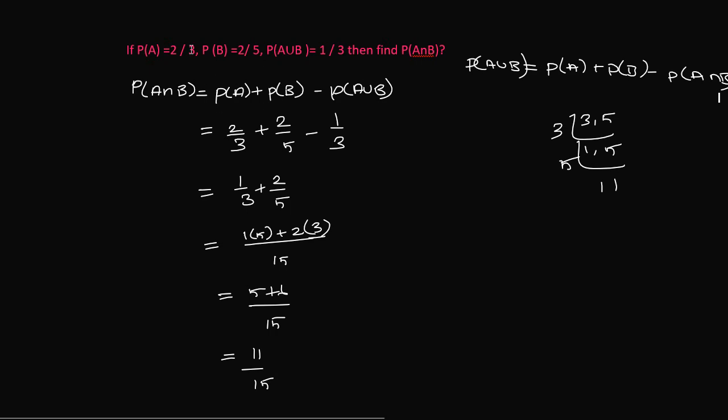Substitute the values: P(A) equals 2/3 plus P(B) is 2/5 minus 1/3. The denominators need to be the same, so 2 minus 1 is 1.